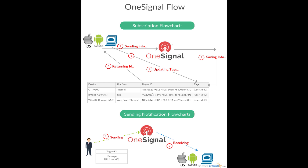We do this tag-update step to identify a specific user across multiple platforms. For example, a user may have a player ID on Android, another player ID on iPhone, and yet another when logging in through Chrome. By using tags, we can identify this user and send the same notification across all platforms. If you don't need to target a specific user, you can skip this step and won't need tags to filter users.